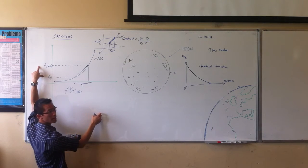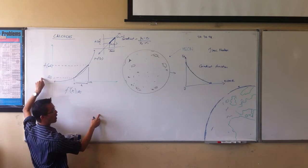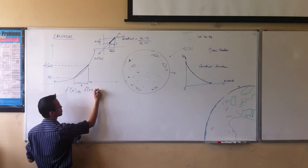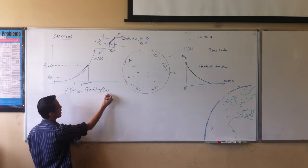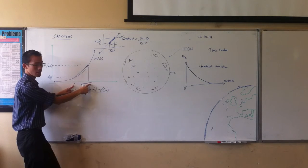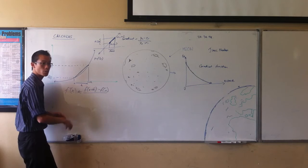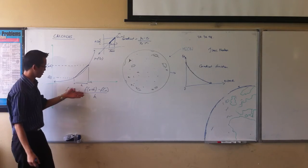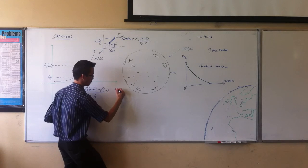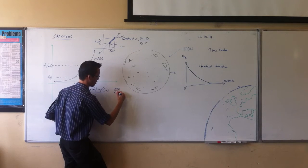So, what's rise over run? Rise is this. This is my y2 and my y1. So, I've got rise over here. And then I'm dividing by run, which is this. In fact, it's just that distance h, which we provided before. Right. So, this is just a gradient function. Rise over run.